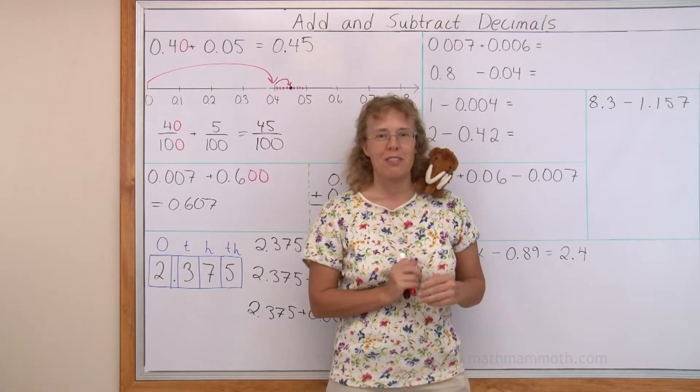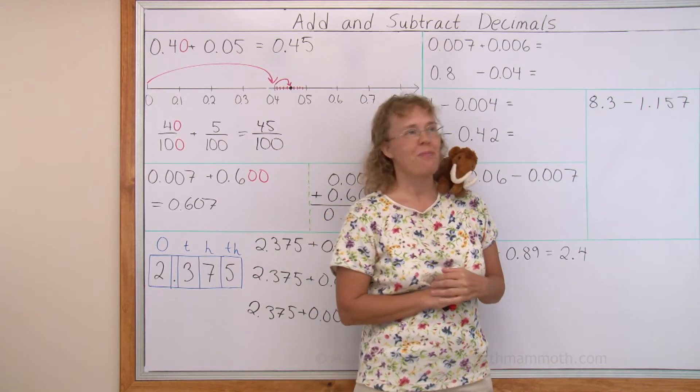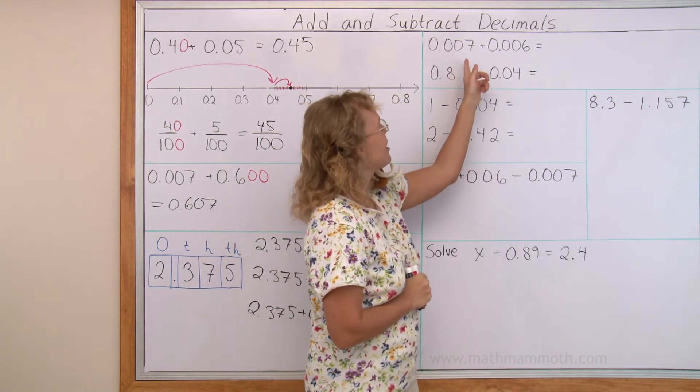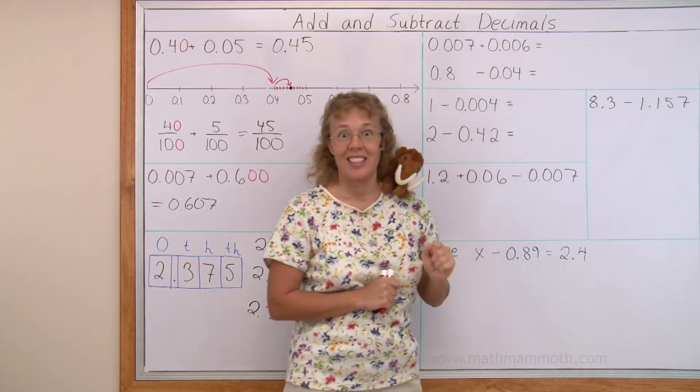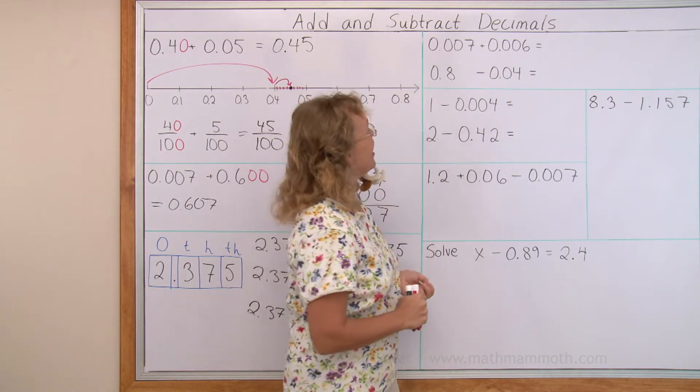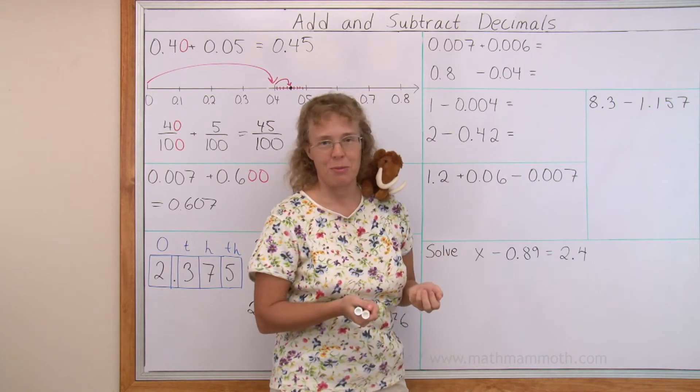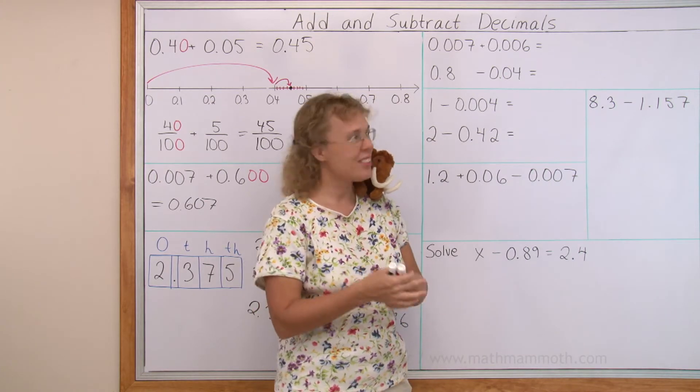Okay, we have a few more problems to solve. The next one: we have 7 thousandths and 6 thousandths. Now we will get our thirteen. Seven plus six equals thirteen and we get thirteen thousandths. So this one was easy.